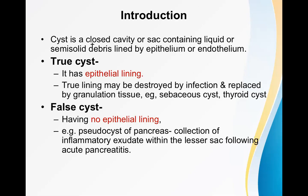Key points: it is a closed cavity or sac, it contains liquid or semi-solid debris — mainly liquid most of the time — and the wall is lined mainly by epithelium, but sometimes by endothelium as well. The differentiation between a cyst and a mass is that a mass is a solid structure, whereas a cyst is a cavity which has liquid inside and is lined by epithelium.